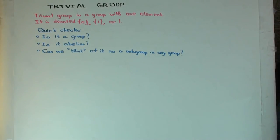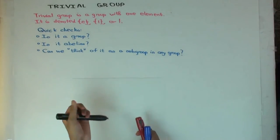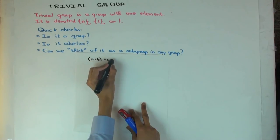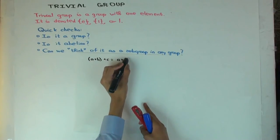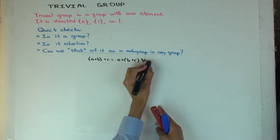Now we want to check whether that's actually a group. So is it a group? Is it associative? Yes. Why? Well, you have to check that a star b star c equals a star b star c for all a, b, c in the group.